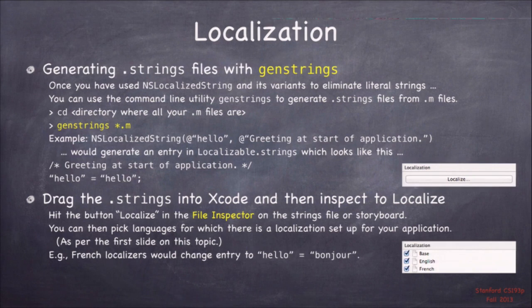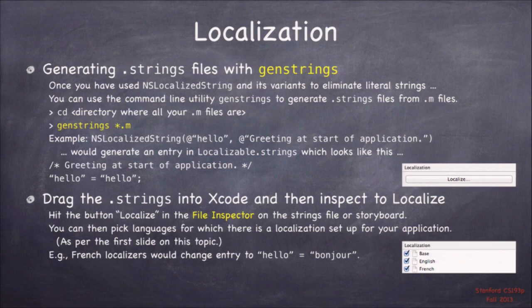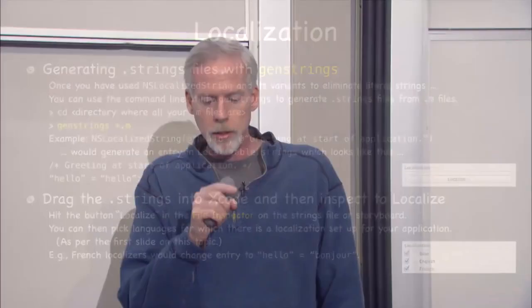When you run GenStrings, you might get multiple .strings files because you can specify a table name with NSLocalizedStringFromTable. You take those .strings files, drag them into your Xcode project, then inspect them with the file inspector, and you'll see a 'Localize' button. Click that and you'll get a list of languages — click however many you want to support. In your file navigator, you'll see a .strings file for every language. Usually you'll click on it and see 'hello = hello', take that entire file, ship it off to a localizer, they'll translate and send it back, then you plop them into your Xcode project and ship it.